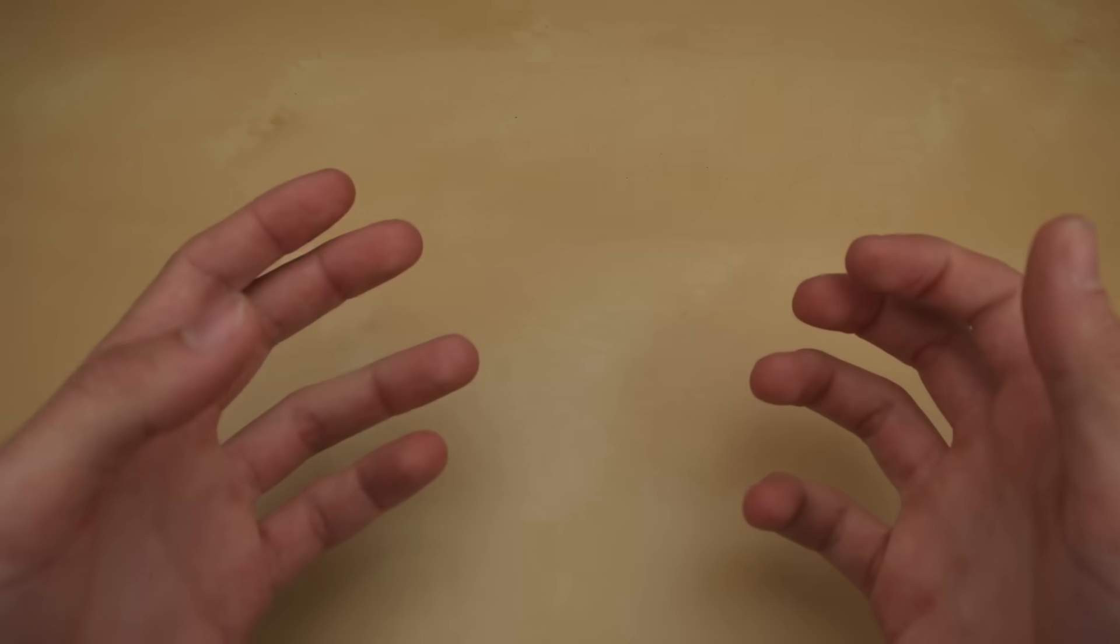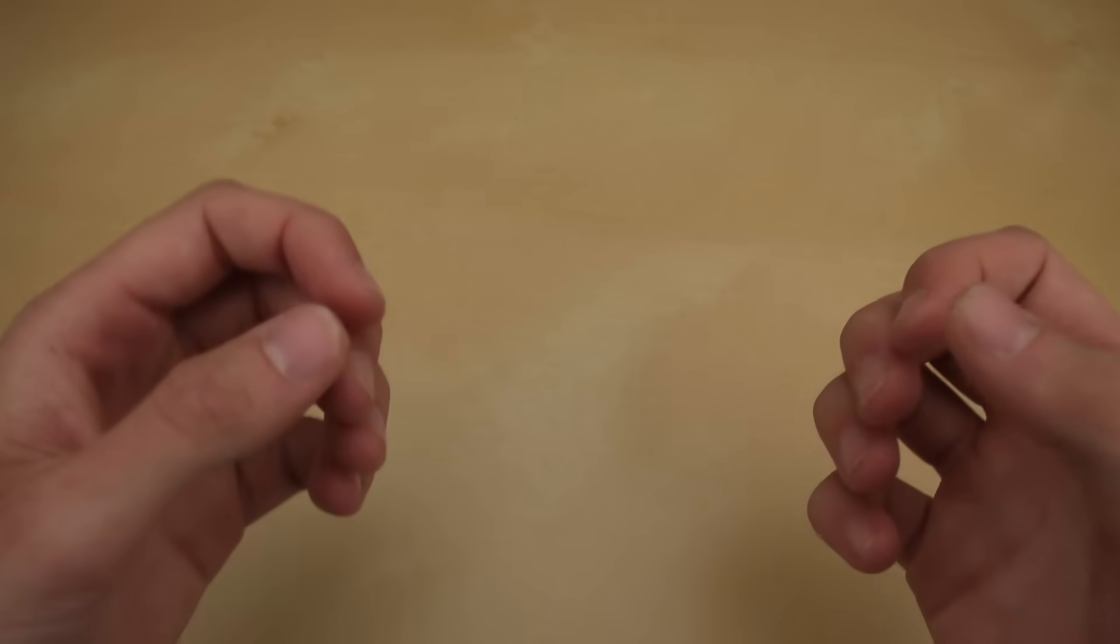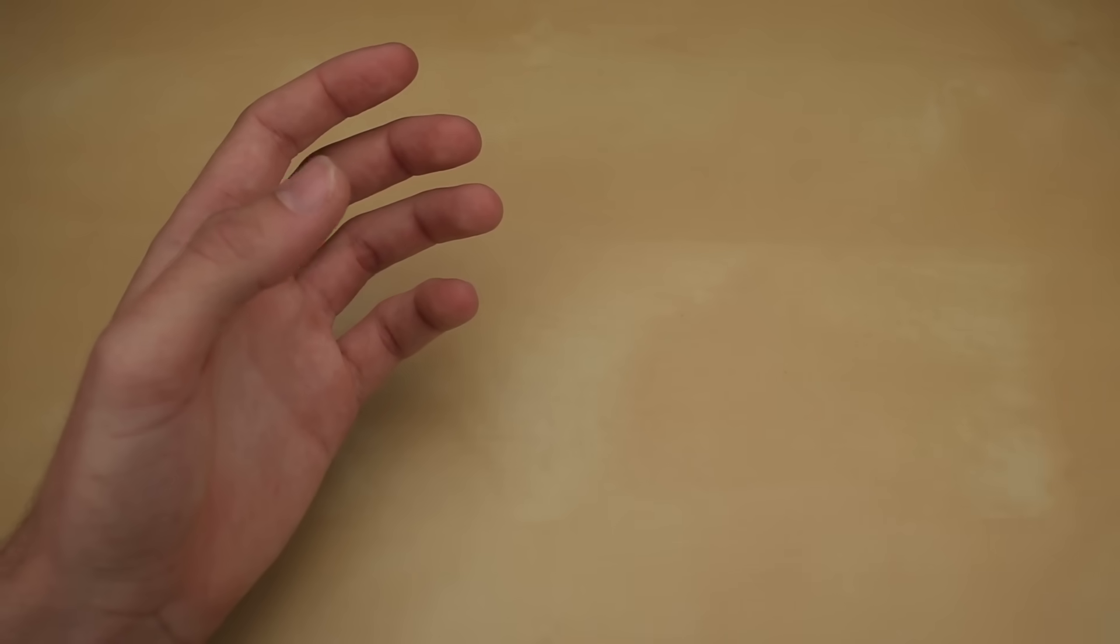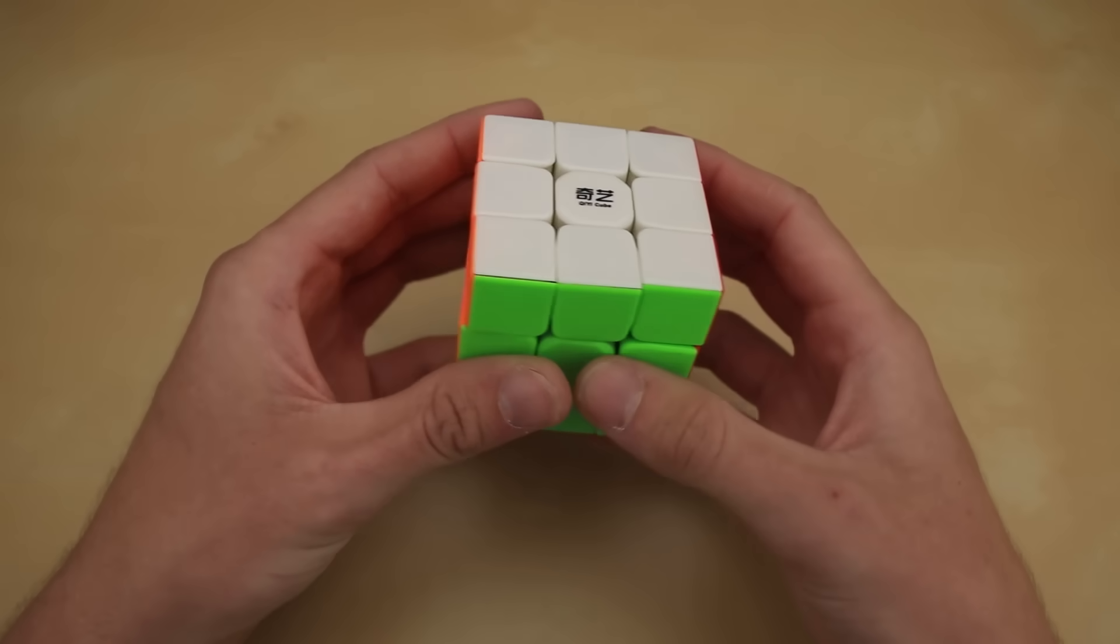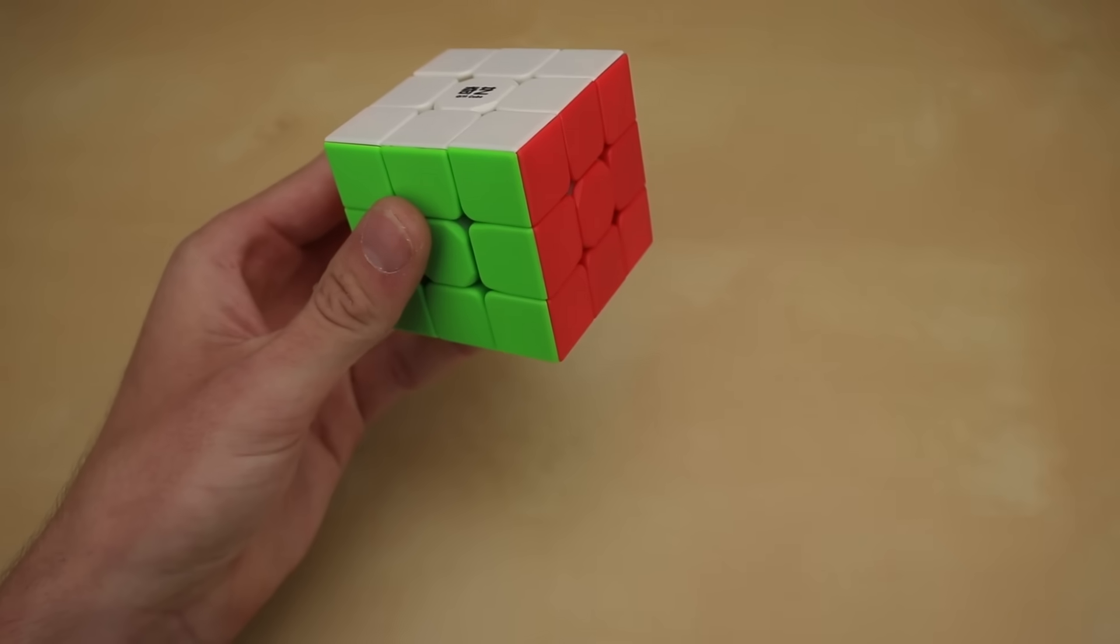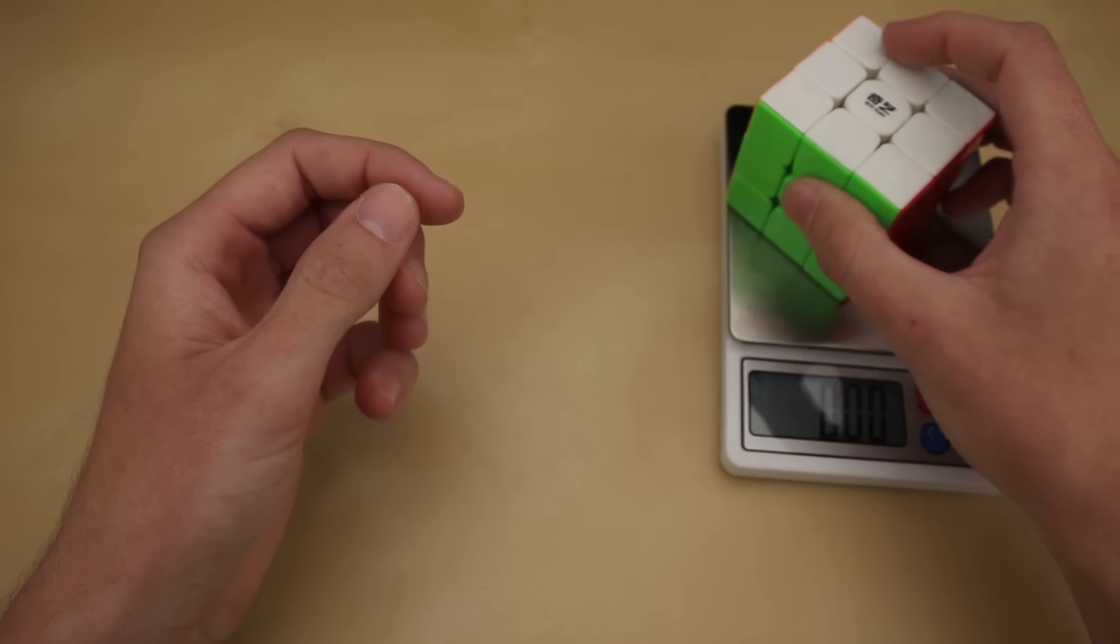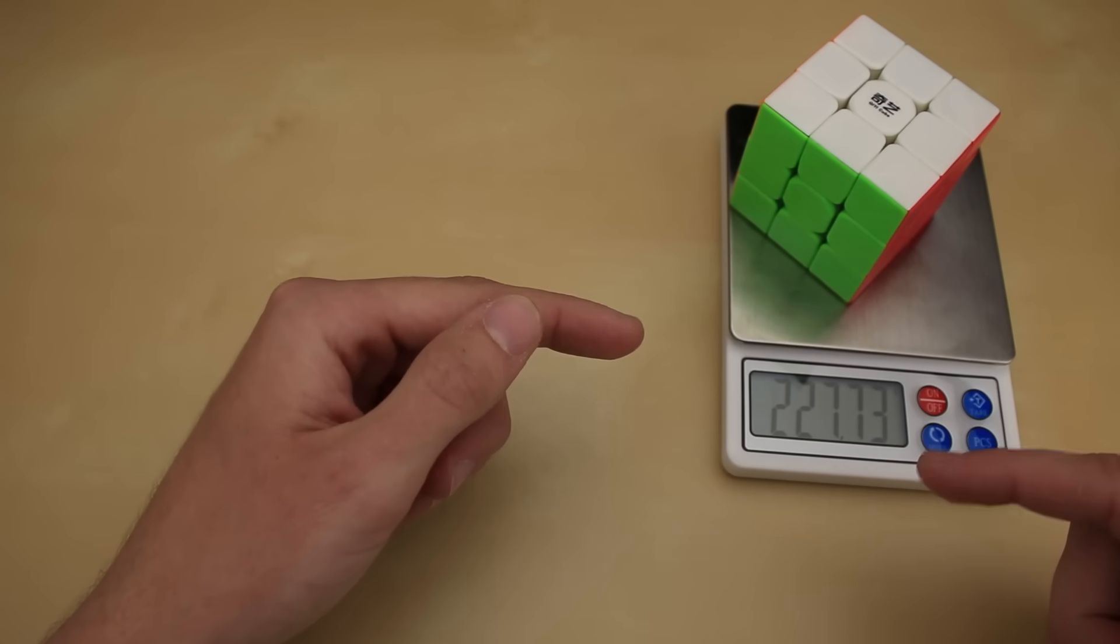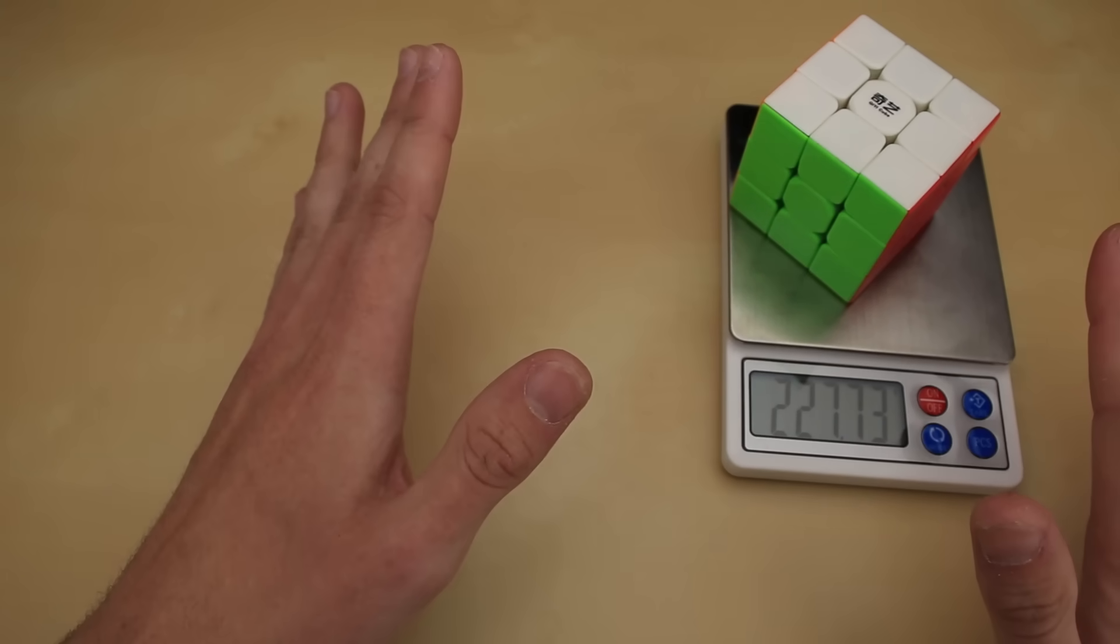Alright, now it's time to explain the actual modifications that I'm going to do to make a cube super heavy, and to do that I first have to introduce you to this 3x3 right here which is currently my heaviest Rubik's Cube. If we go ahead and get the scale back out again we can see it comes in at 228 grams, which is just incredibly heavy.